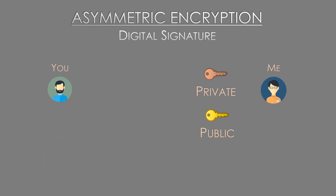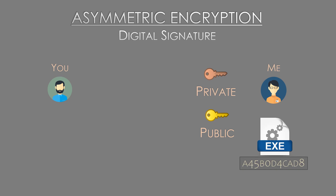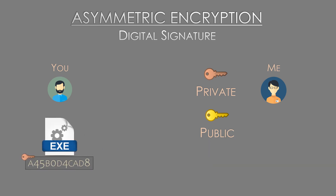Similar to this is digital signatures, which are commonly used with software to prove they are from a genuine source. Imagine I want to send you a file and prove I was the author. I can create a signature — perhaps a hash of the file — and encrypt it with my private key, then attach the encrypted signature to the file. Anyone can use my public key to decrypt the signature. Upon receiving the file, you can generate a hash and compare it to the hash in the signature. If they're the same, you can trust the file came from me.